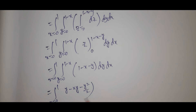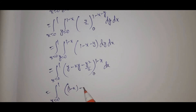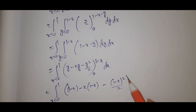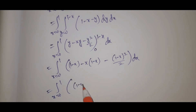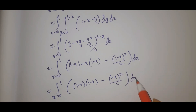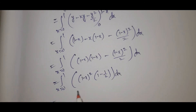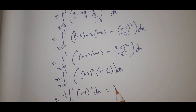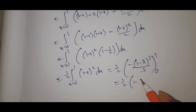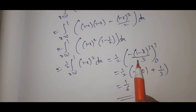Applying the integral: y minus xy minus y squared by 2, evaluated from 0 to 1 minus x, dx. Substituting the upper limit gives 1 minus x minus x times 1 minus x minus 1 minus x whole square by 2, which simplifies to 1 minus x whole square by 2. Then integrating: 1 by 2 times the integral from 0 to 1 of 1 minus x whole squared dx equals 1 by 2 times minus 1 minus x whole cube by 3, evaluated from 0 to 1, giving the answer 1 by 6.